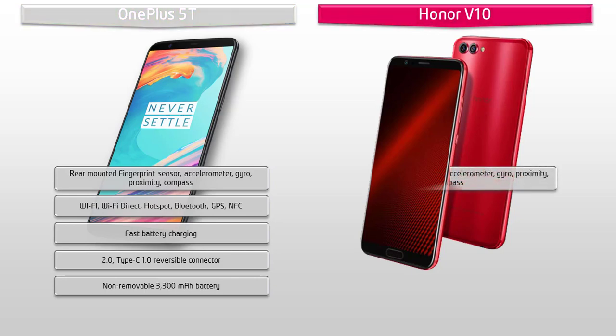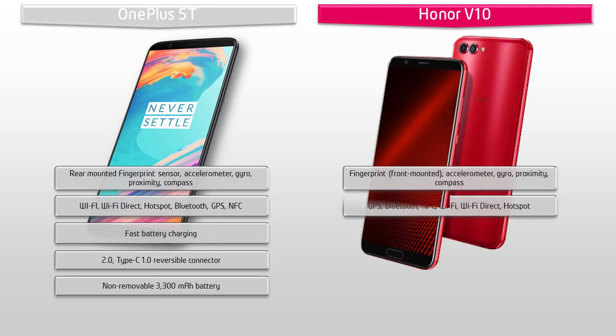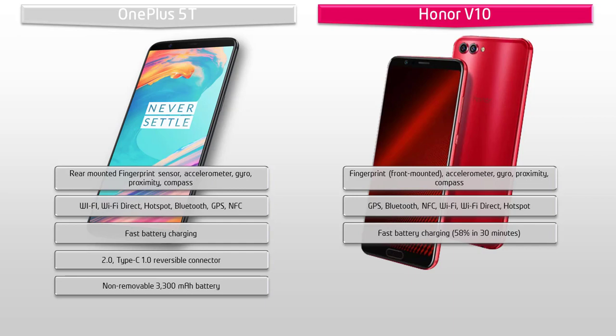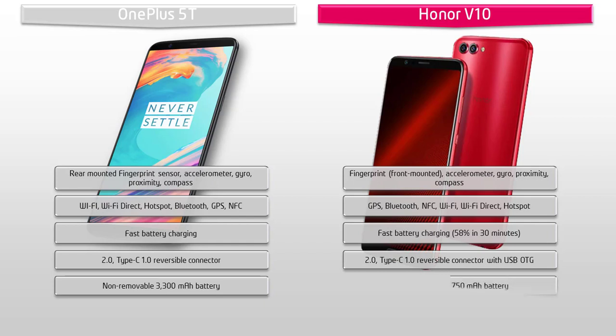The Honor V10 comes with a front-panel fingerprint sensor along with sensors like compass, proximity, gyro, and accelerometer. This phone also comes with GPS, Bluetooth, NFC, Wi-Fi, Wi-Fi Direct, hotspot, and a 3.5 mm audio jack, but there is no FM radio in this device. The Honor V10 also comes with fast battery charging at 58% in 30 minutes, a Type-C reversible connector with USB OTG, and is embedded with a non-removable 3750 mAh battery.